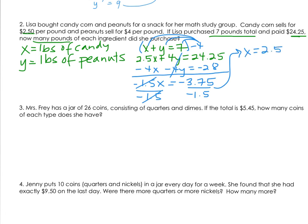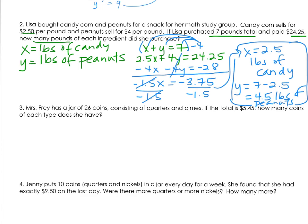Our label is pounds of candy corn. If there are 2.5 pounds of candy corn, how many peanuts are purchased? We know that x plus y equals 7, so if I subtract my answer from 7, that means we purchased 4.5 pounds of peanuts. Make sure to label your answers. This would be the entire answer section right over here.